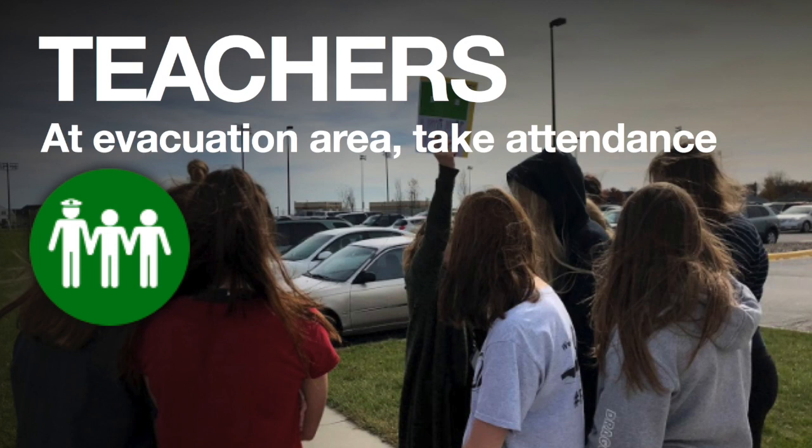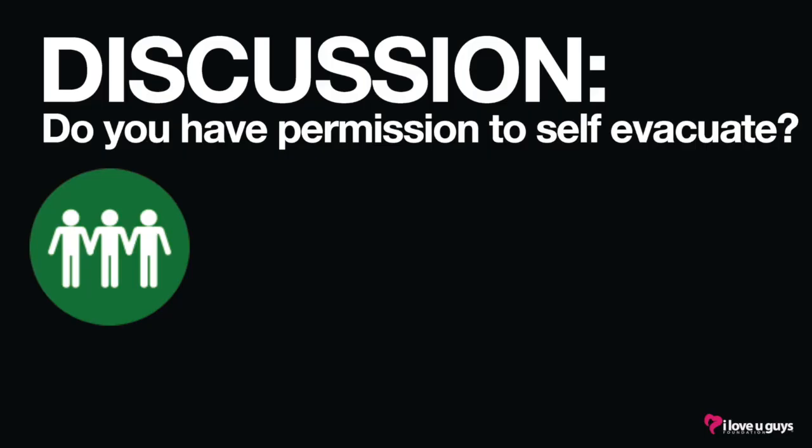Once you are at the evacuation assembly area, take attendance. If you were able to take attendance during the lockdown, verify students in the assembly area against the roster you created during the lockdown. If everything is okay, per the instructions you will show the green side of the card. Students have permission to self-evacuate in certain circumstances, but they are reminded to pay attention to the situation: do they know where the threat is, can they see the exit, and is it away from the threat, noise, or commotion? Remember, a locked door is a proven time barrier.